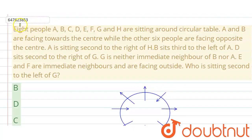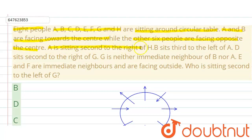Hello everyone, let's start our question. Our question is: 8 people A, B, C, D, E, F, G and H are sitting around a circular table. A and B are facing towards the centre, while the other 6 people are facing opposite to the centre. A is sitting second to the right of H. B sits third to the left of A. D sits second to the right of G. G is neither an immediate neighbour of B nor A. E and F are immediate neighbours and are facing outside. Who is sitting second to the left of G?